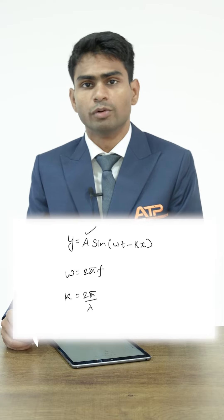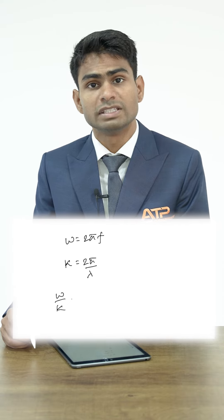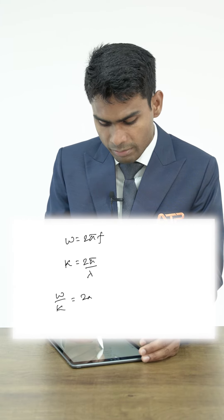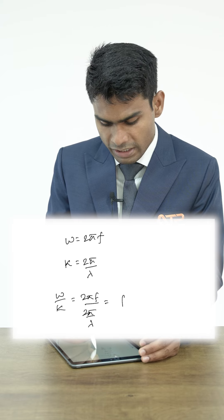The expression omega by k is very important here. That is called the wave speed and here it can be written as 2 pi f upon 2 pi by lambda and we are getting f lambda.